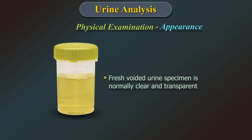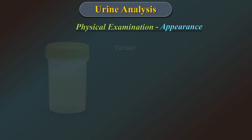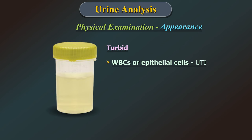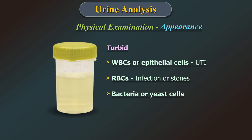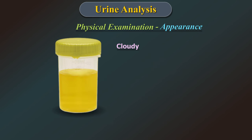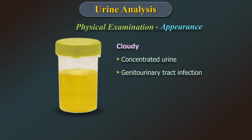Appearance: freshly voided urine specimen is normally clear and transparent. It may be turbid due to white blood cells or epithelial cells from urinary tract infection, red blood cells due to infection or stones, high number of bacterial or yeast cells, or amorphous urates in case of gout and leukemia. Cloudy urine could be due to concentrated urine, genitourinary tract infection, phosphates, urates or uric acid.